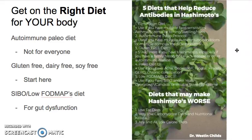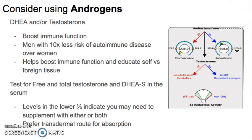There is a specific diet called the low FODMAPS diet — basically you're getting rid of some longer-chain carbohydrates that certain bacteria and fungus feed off of. You're essentially starving out the yeast and the bacteria by not giving them the substrate they use to survive. So number one: get on the right type of diet for your body.